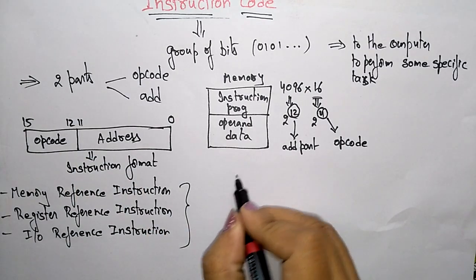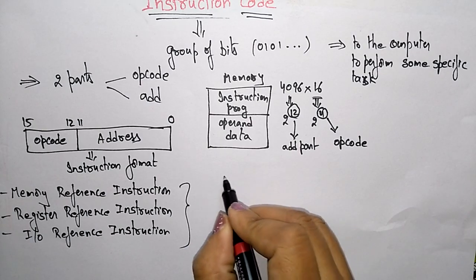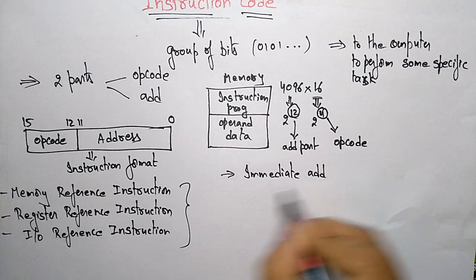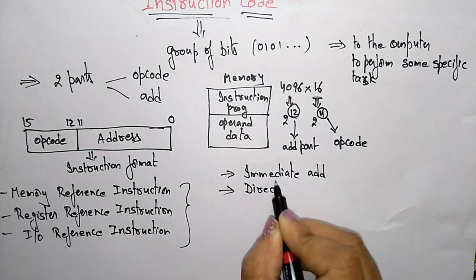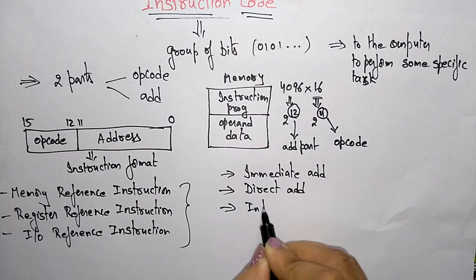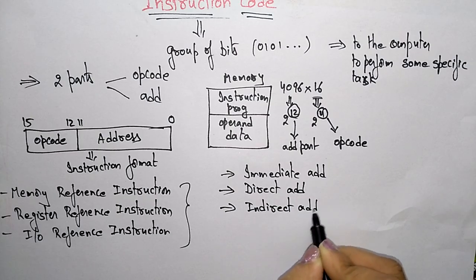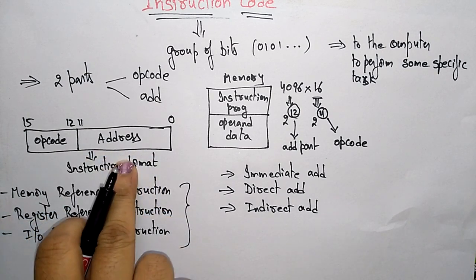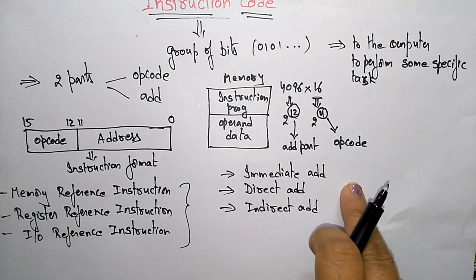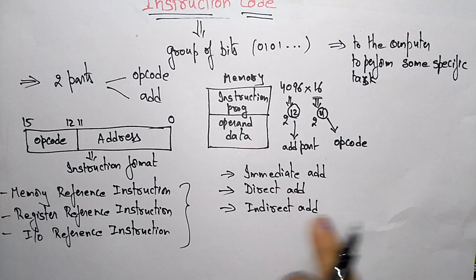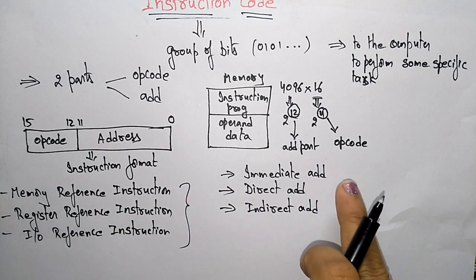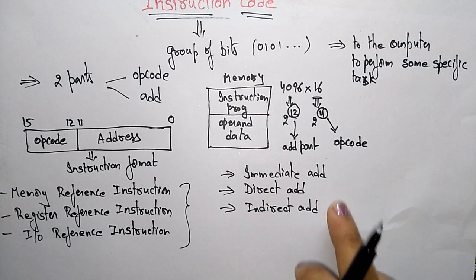This instruction code can be of three address formats: immediate address, direct address, and indirect address. The instruction holds op code and address, and this op code and address will correspond to immediate, direct, or indirect. Based on the instruction, the processor can understand whether the data it gets is immediate data, direct data, or indirect data.